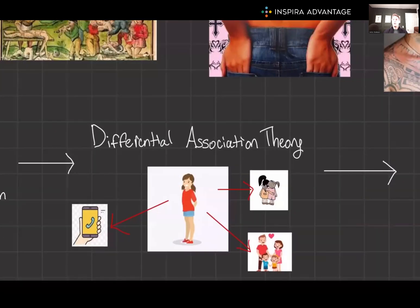Next, differential association theory. It posits that deviance is learned behavior from those around us. If a teenager grows up in an environment where illegal substance use is normalized by peers, they're more likely to adopt those behaviors — not because of individual pathology, but due to social influence. This theory stresses the importance of social context in shaping our definitions of and inclinations towards deviance. Simply put: who you hang out with is who you're going to become.